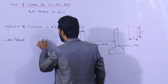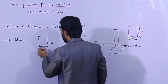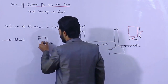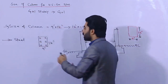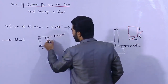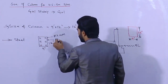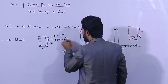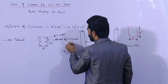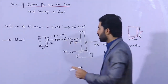For steel reinforcement when the size is 9 by 12 inches, use a minimum of 6 rods. The diameter should not be less than 12 mm. For the lateral tie, the diameter should be 8 mm with a spacing of 150 mm center to center — or you can say 6 inches center to center.